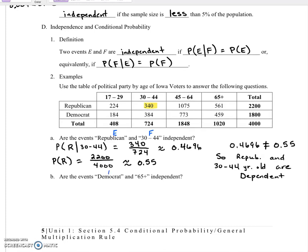So Democrats, we'll call that event F and 65 independent. Sorry, that is not what I wanted to do. Democrats are still going to be E and the 65 plus age is still going to be F. But instead of doing part A, where we did P of E given F equals the probability of E, this time we'll check the probability of F given E equals the probability of F.